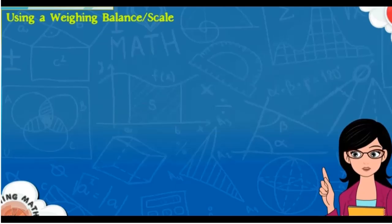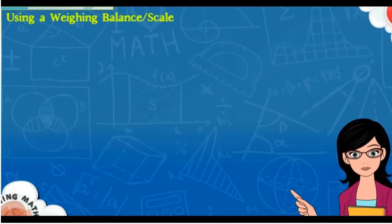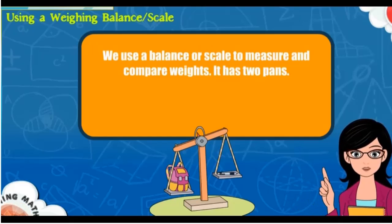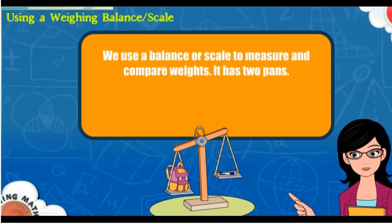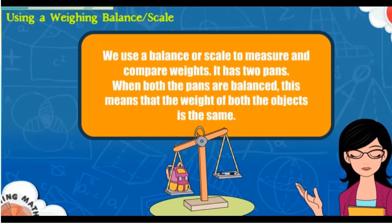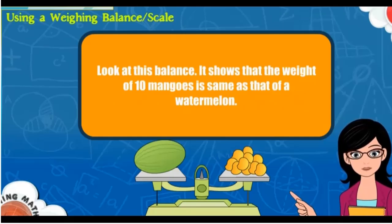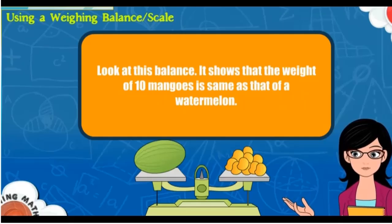Using a weighing balance or scale, we measure and compare weights. It has two pans. When both pans are balanced, this means that the weight of both objects is the same. For example, this balance shows that the weight of 10 mangoes is the same as that of a watermelon.